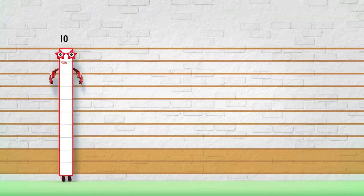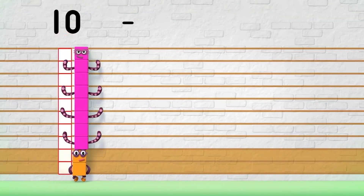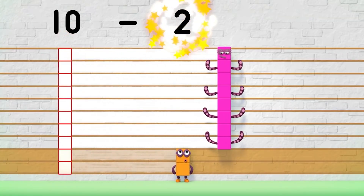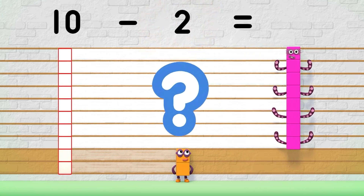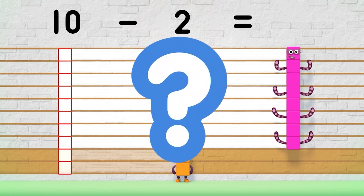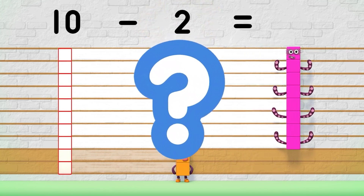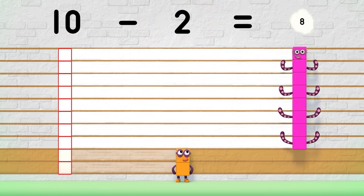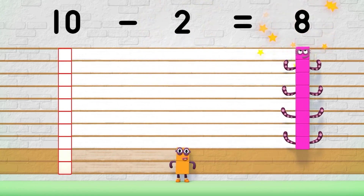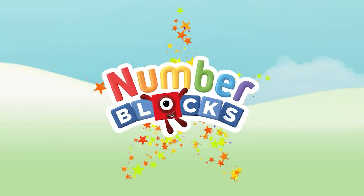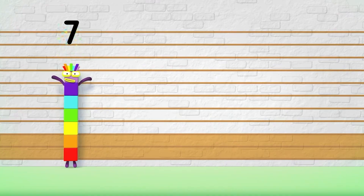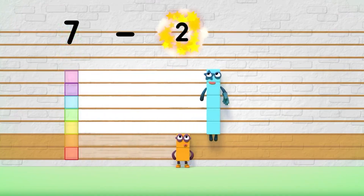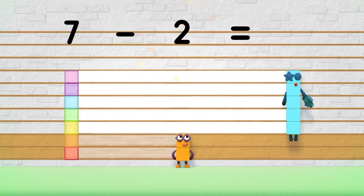Seven minus two equals five. That's the difference.